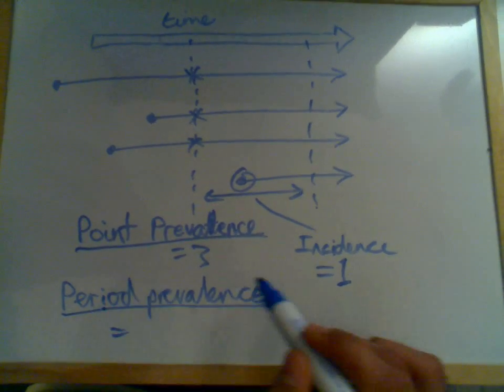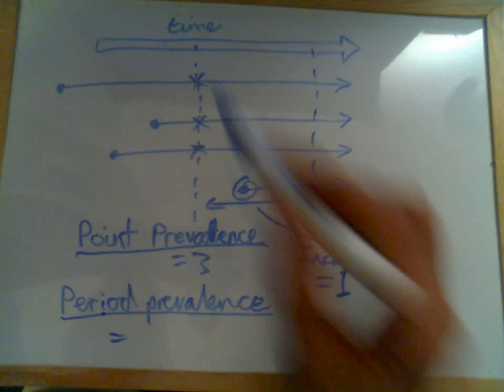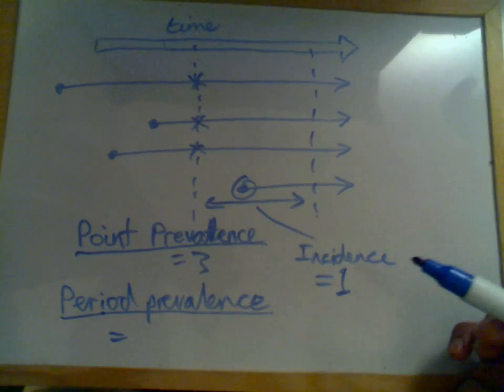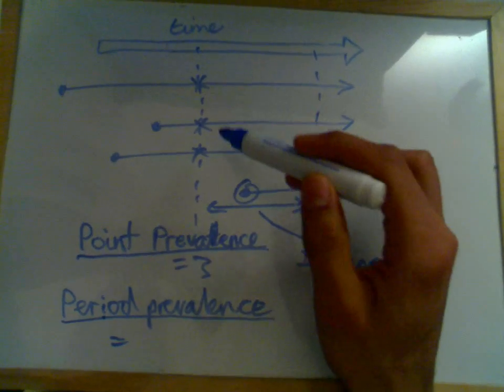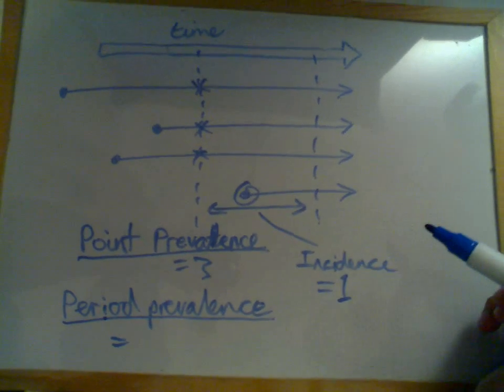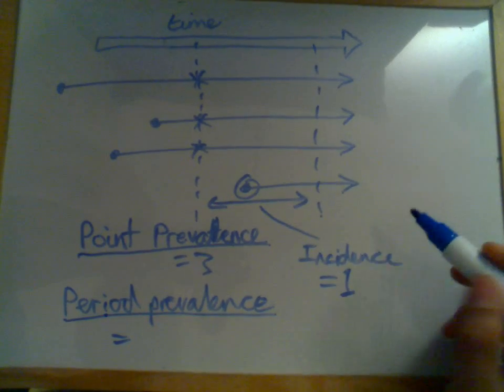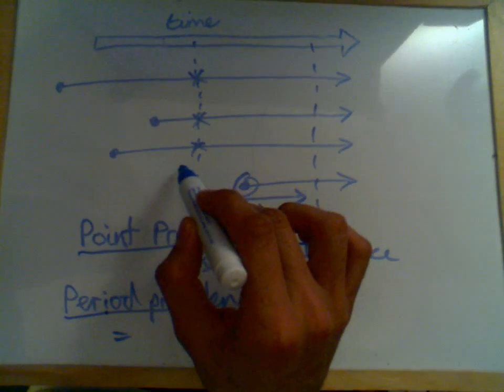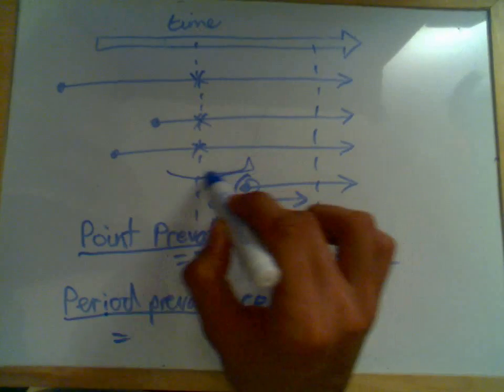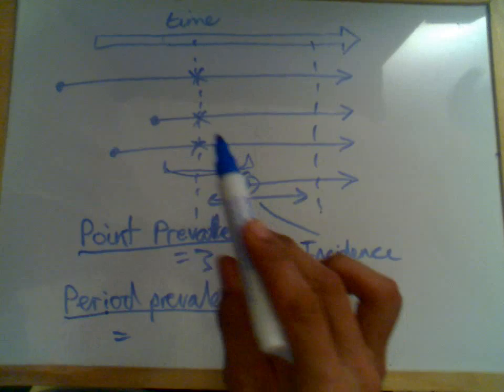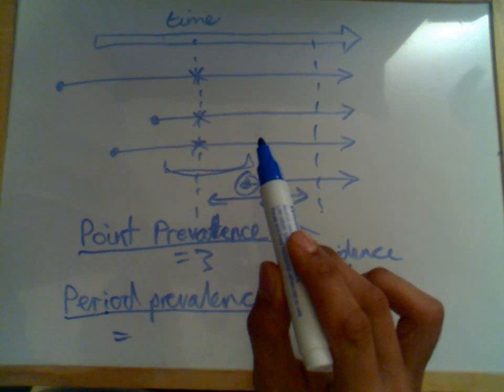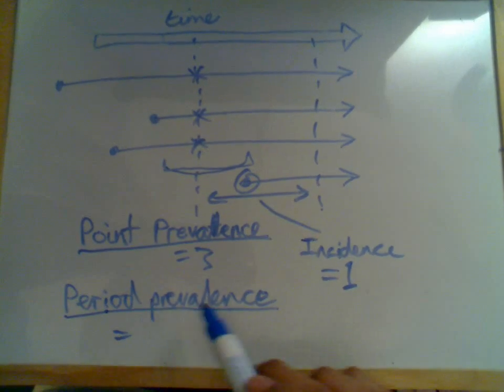So if we wanted to measure episodes of asthma, picking a single point in time is not going to be useful. Because the chances of someone at that exact point in time having an asthma attack are pretty slim. It's going to be a pretty useless measurement. So we're actually going to pick a period of time and we're going to observe who has asthma attacks over that period of time. That's period prevalence.